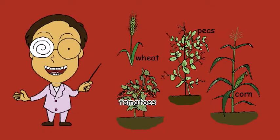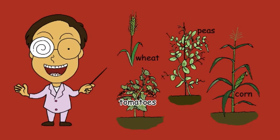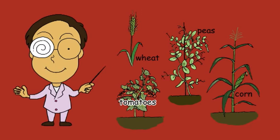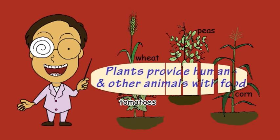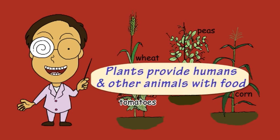Plants use the energy in sunlight to grow and produce fruits and seeds. This is very important for humans and many other animals, because plants provide us with food.